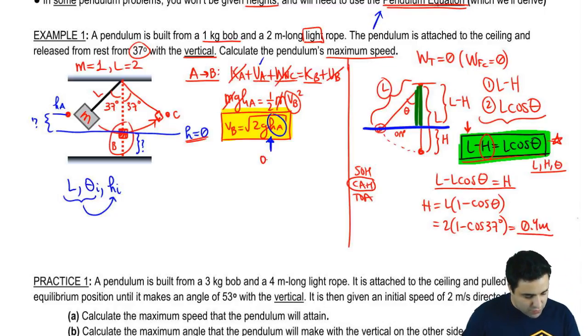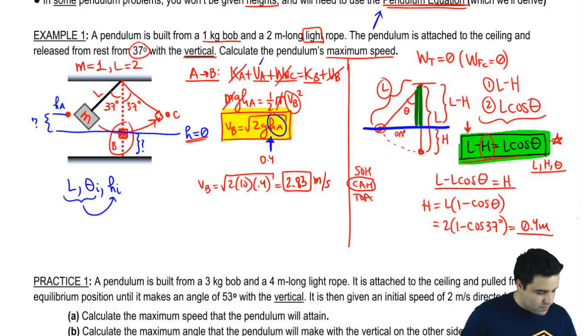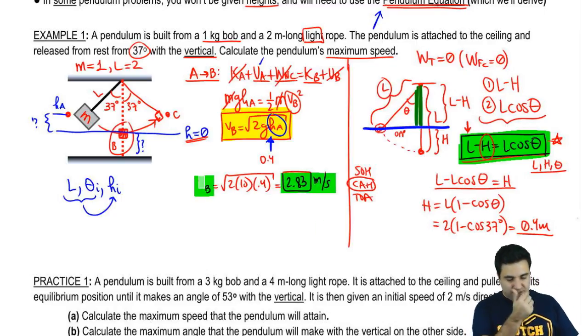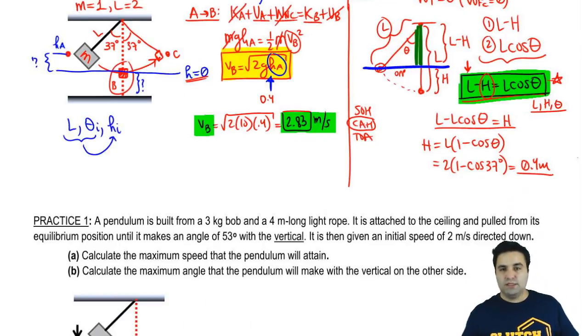So V_B is the square root of 2 times 10 times 0.4, which means that the velocity over there will be 2.83 meters per second. That is our final speed at the bottom. Cool, so that's how this works.